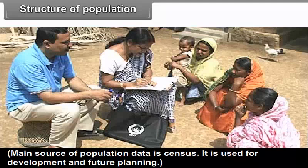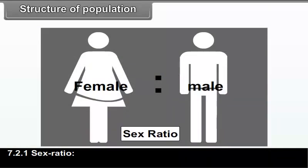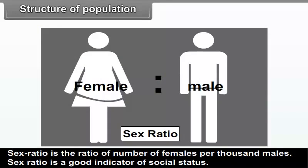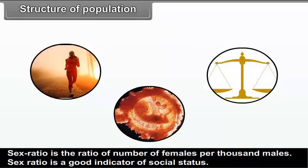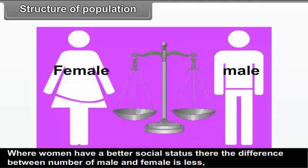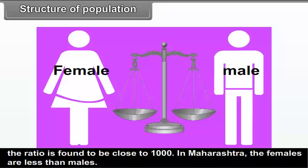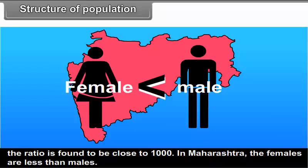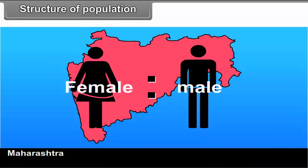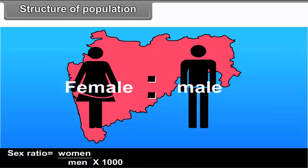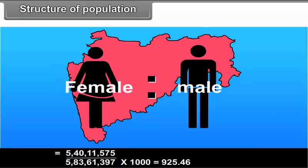The main source of population data is the census, used for development and future planning. 7.2.1 Sex Ratio. Sex ratio is the ratio of number of females per thousand males, and is a good indicator of social status. Where women have a better social status, the difference between males and females is less, and the ratio is close to 1000. In Maharashtra, females are fewer than males. The sex ratio equals females divided by males multiplied by 1000: 5 crore 40 lakh 11,575 divided by 5 crore 83 lakh 61,397 multiplied by 1000, which equals 925.46.